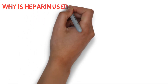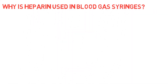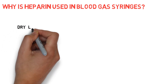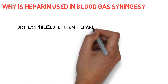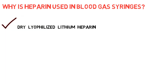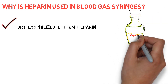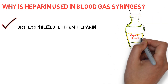Why is heparin used in blood gas syringes? Coagulation of the blood sample must be avoided because clots interfere with the function of the blood gas analyzer. Dry lyophilized lithium heparin is used so that electrolyte measurement can be performed using the blood gas sample. Moreover, dry heparin reduces the risk of pre-analytic errors caused by dilution of the sample with the volume of the liquid form of heparin.